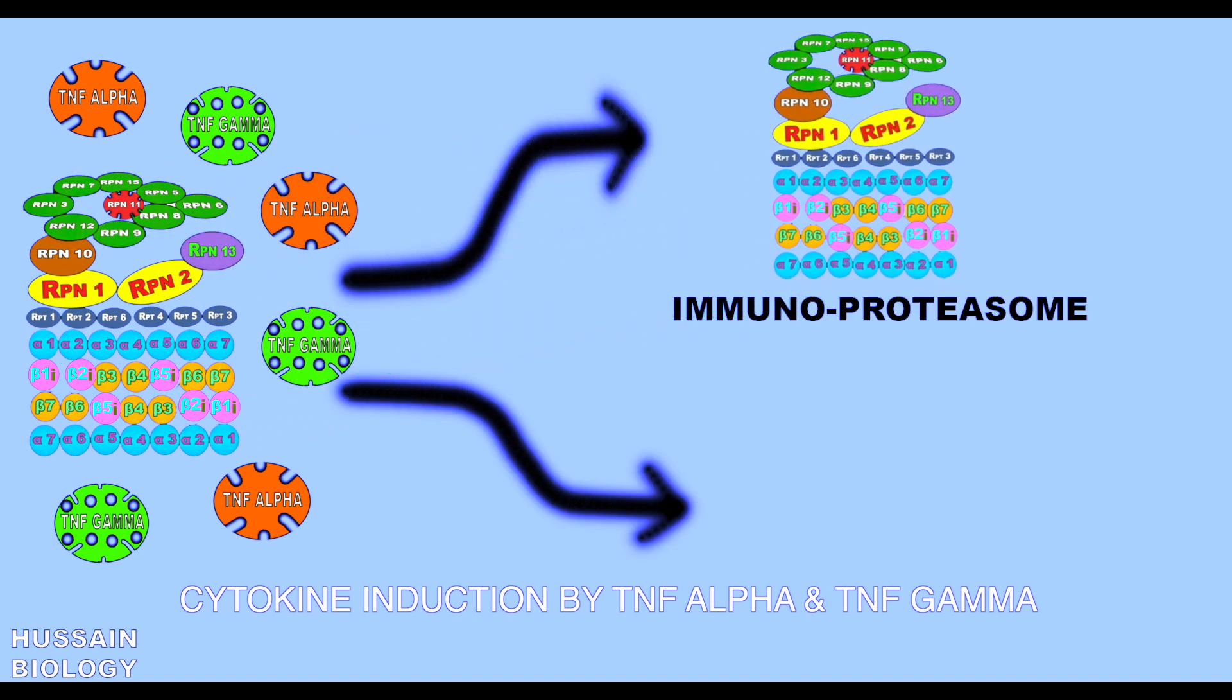We see in the diagram upon cytokine induction, proteosome residues are replaced by distinct isoforms like beta 1i, beta 2i, and beta 5i, and this forms the immunoproteosome. In the same way, same cytokine induction in the thymus produces the thymoproteosome.